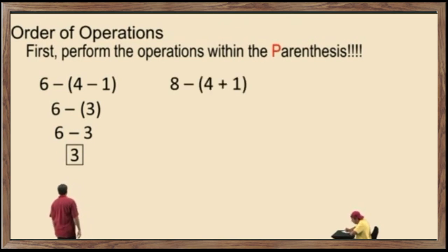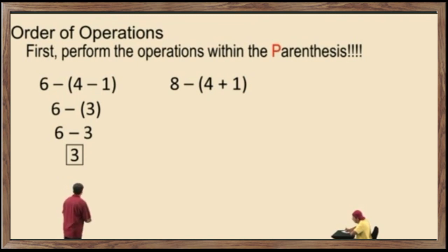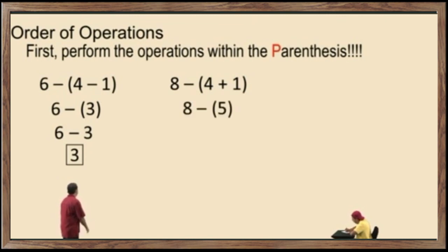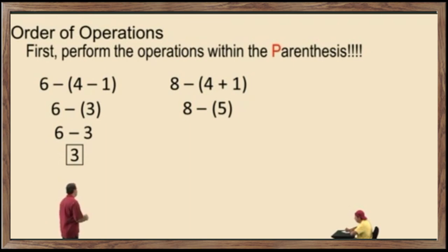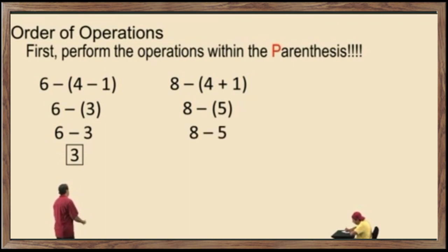Let's take a look at this one: 8 subtract 4 plus 1. Notice the sum of 4 and 1 is in the parentheses, so we simplify that first. That's 5. Bring down our work. And since we're subtracting a positive 5, we don't require those parentheses. So 8 subtract 5 is 3.